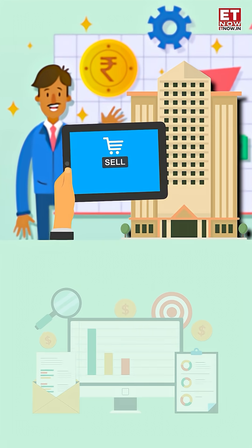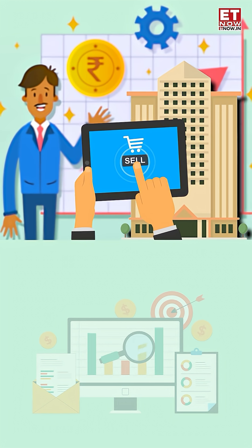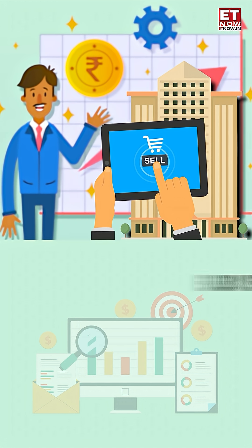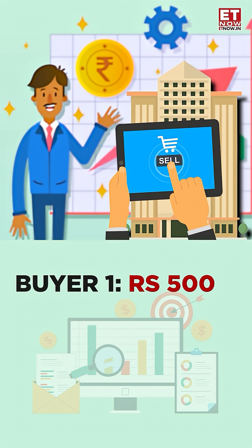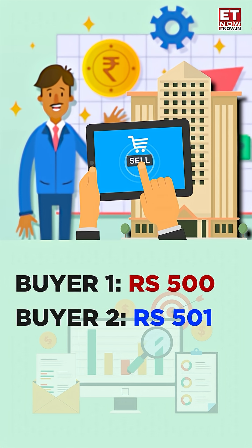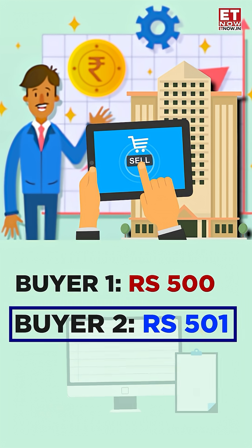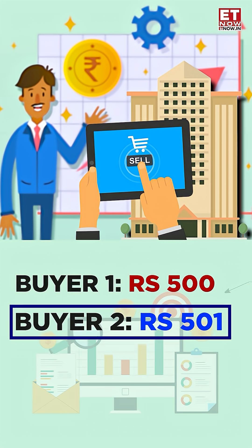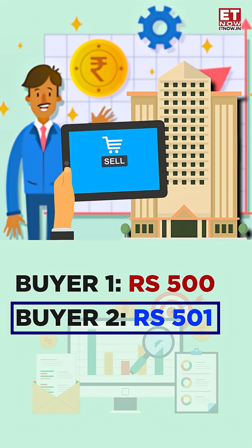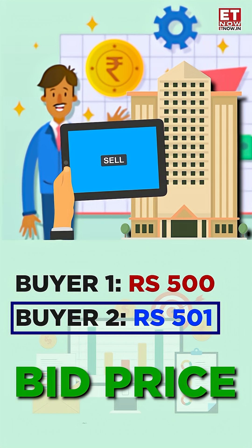For example, you're trying to sell shares of ABC company. Various investors are placing their orders. One says, 'I will pay 500 rupees for the stock,' and another says, 'I will pay 501 rupees for the stock.' So the current bid price is the highest offer — 501 rupees. If you want to sell your shares immediately, you will sell them at the bid price, because that's the highest price the investor is willing to offer.